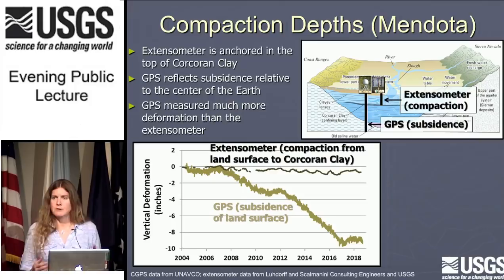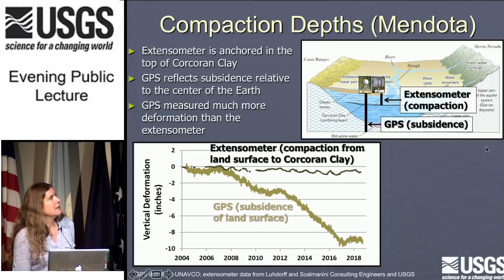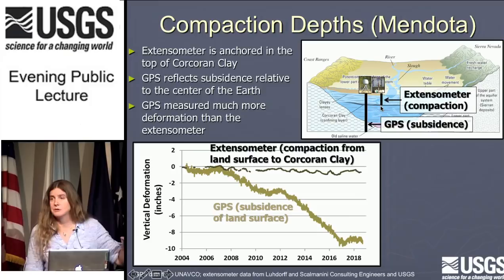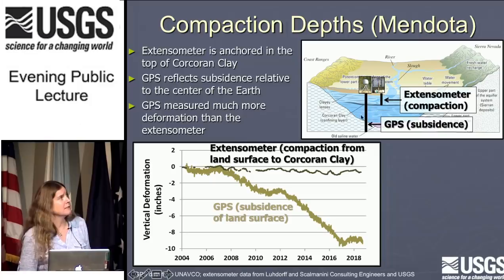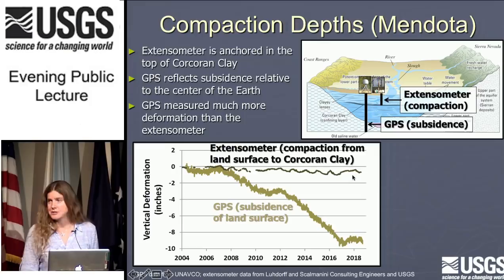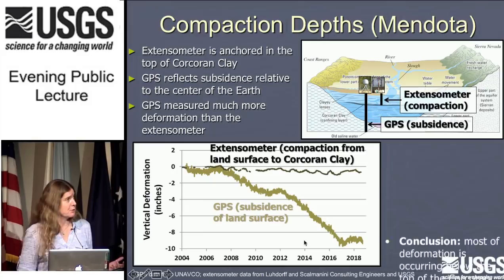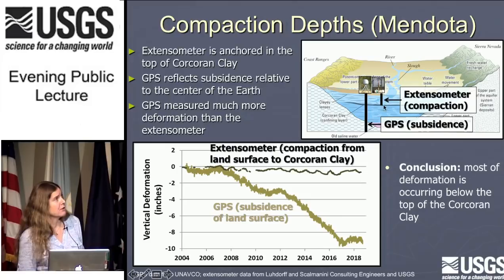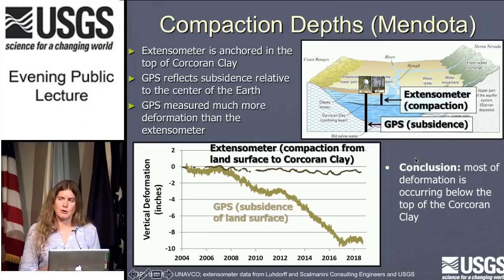Regarding depths of compaction: extensometers are the only way to really figure out at what depth intervals compaction is happening. This particular extensometer is anchored just above the top of the Corcoran clay, so it's measuring only the shallow system. The GPS theoretically goes right to the center of the Earth — it captures all the subsidence. Graphing these together, you see much less compaction at the extensometer than at the GPS site. So we conclude that most of the compaction is happening below the top of the Corcoran clay. We've done quite a bit of work to figure out if the Corcoran clay is a big offender — and as I mentioned, it really isn't.